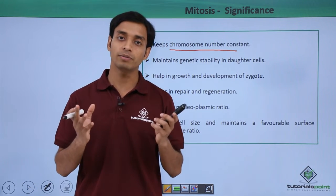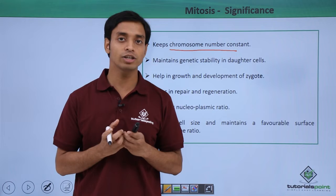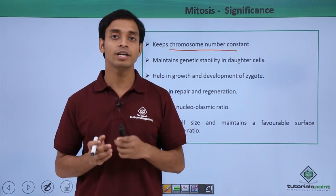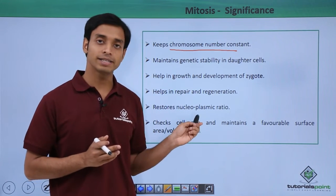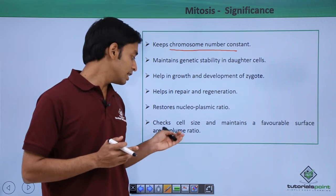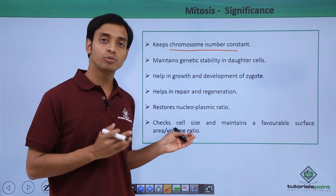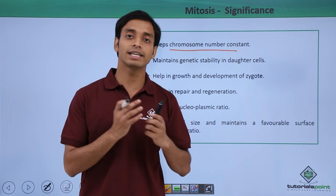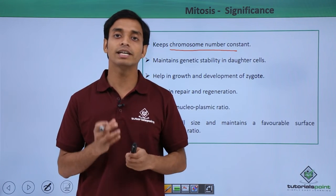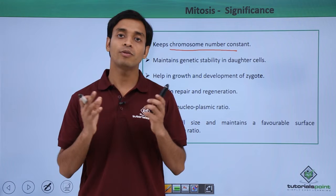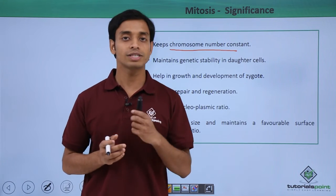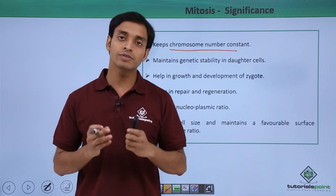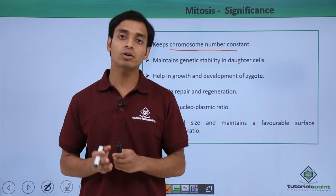Mitosis checks cell size and maintains a favorable surface area-to-volume ratio. The cell size does not increase too much, nor does it shrink — a standard cell size is maintained only through mitosis. This surface area-to-volume ratio is very important because it acts as a cell signaling stimulus for the process of cell division, and mitosis maintains this stimulus.